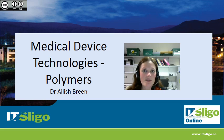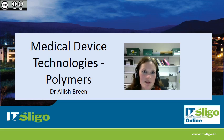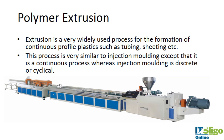In the next few slides I'm going to talk about extrusion — this is probably the longest section in terms of polymer processing. Extrusion is the most widely used process for forming continuous plastic profiles such as tubing and sheeting, and it's particularly prevalent for catheters and dialysis tubing.